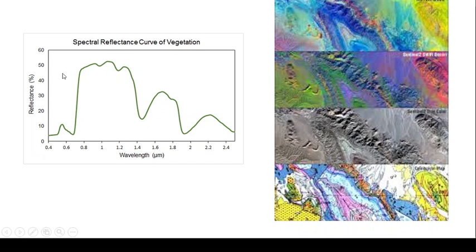Here you can see different satellites which have captured images of a sample, representing spectral bands. As more number of bands are used, the same image shows different and more precise classification.